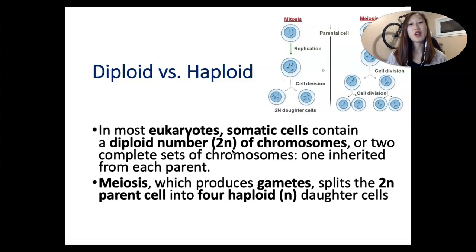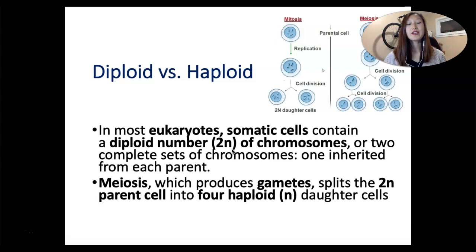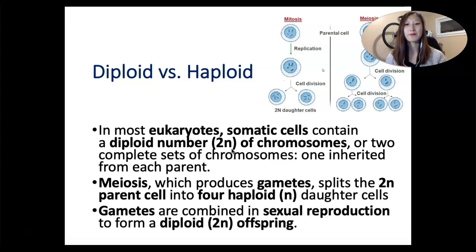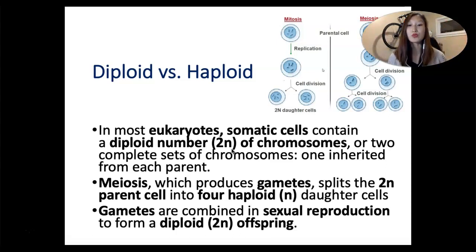Meiosis is the process that produces gametes. It splits the two sets of chromosomes during meiosis I, where homologous chromosomes are paired up and they split from each other, giving us haploid daughter cells that we can pass on to the offspring. Gametes are then combined in sexual reproduction to form a diploid offspring — you get one set plus another set, together giving two sets for a diploid offspring.